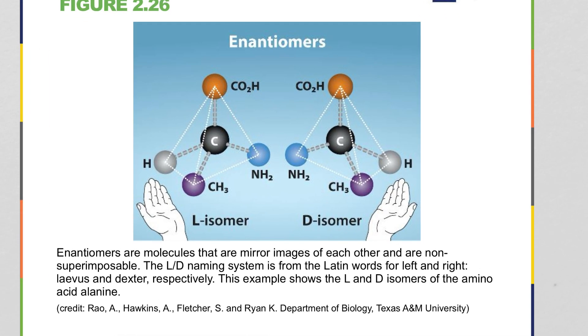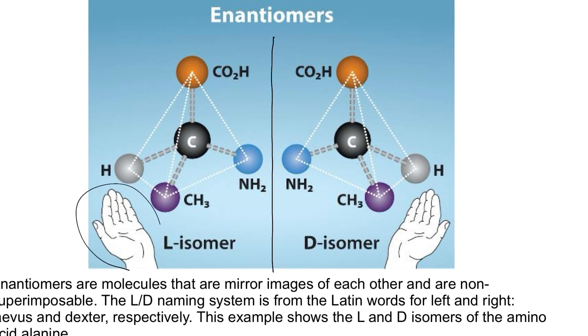In enantiomers, this is just a more detailed view of what you're seeing. So same thing that we saw before. They're showing you the example of handedness, right? So this is the mirror image that we saw before, central carbon, one, two, three, four different atoms or side molecules attached to that carbon.